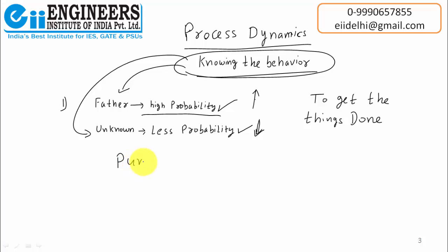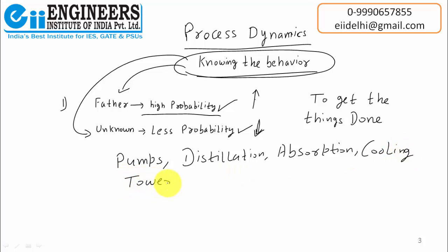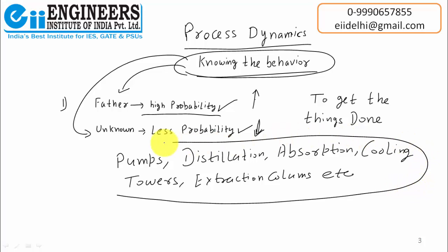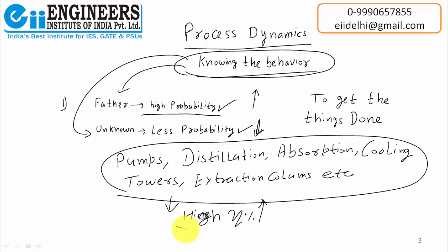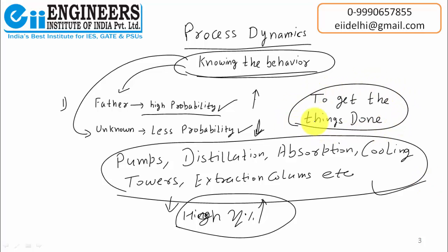The same thing happens in our chemical process industries. There are many pieces of equipment — pumps, distillation columns, absorption columns, cooling towers, extraction columns, and so on. From all these equipments, we want high efficiencies. That means we want to get our things done from all these equipments. To do that, we need to know the behavior of those equipments. If we know them well, then it is very easy for us to obtain the highest efficiency possible.